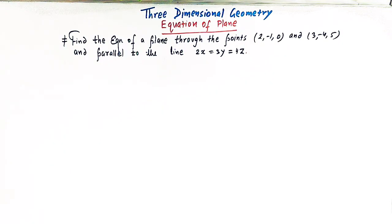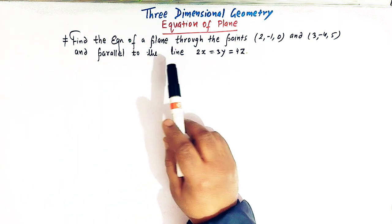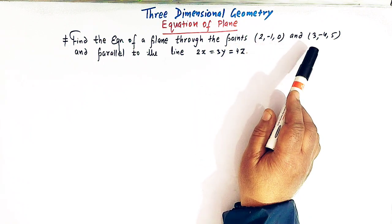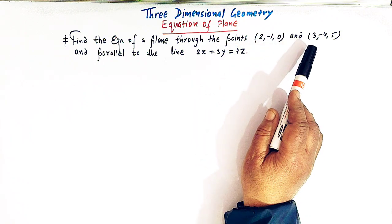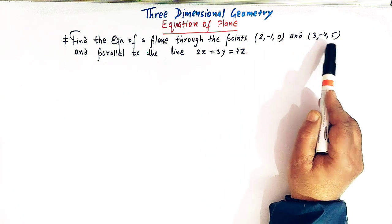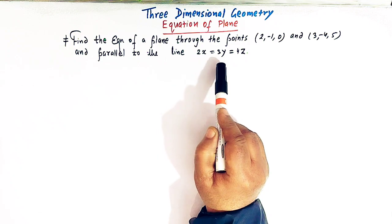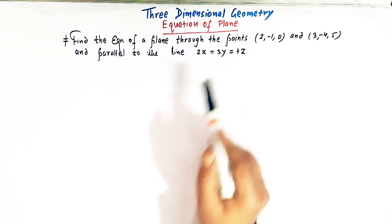Hello viewers. In this session we are going to discuss one important problem from three-dimensional geometry related to the equation of a plane. We have to find the equation of a plane which passes through two points with coordinates (2, -1, 0) and (3, -4, 5), and is parallel to the line 2x = 3y = 4z.